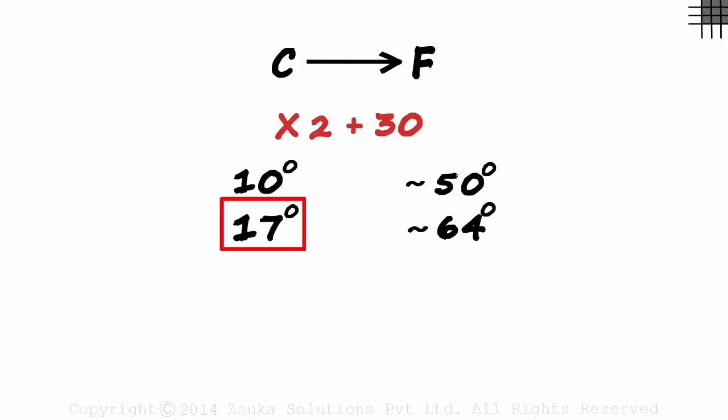17 degrees Celsius is approximately 64 degrees Fahrenheit. If we do the exact calculations using the formulae, we would have got 10 degrees Celsius as 50 degrees Fahrenheit. Yes, we were a bit fortunate here.